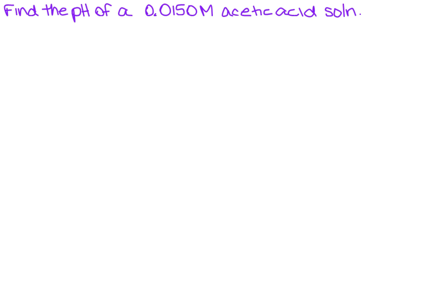We want to find the pH of a 0.0150 molar acetic acid solution. I know that for pH I need a hydronium ion, and the only way I can get a hydronium ion from acetic acid is to write a reaction. So you guessed it, we're going to use the RICE method.